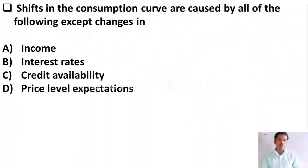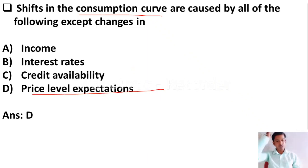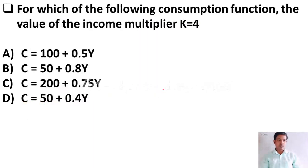Next question: shifts in the consumption curve are caused by all of the following except changes in — Option A: income; Option B: interest rate; Option C: credit availability; Option D: price level expectations. The right answer is Option D — price level expectations.